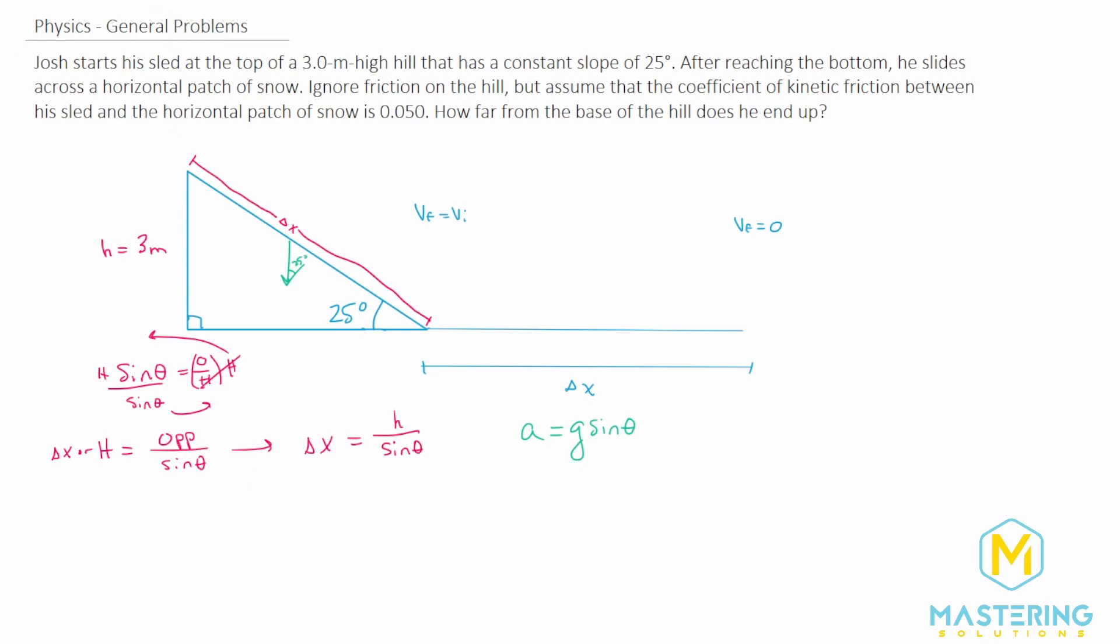So what equation are we going to use on the kinematics? So we have v final squared is equal to v initial squared, plus two times the acceleration times delta x.